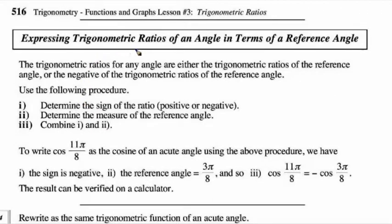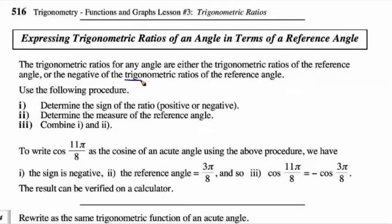Expressing trigonometric ratios of an angle in terms of a reference angle. The trig ratio for any angle is either the trig ratio of the reference angle or it's the negative of the trig ratio of the reference angle. So what's most important here is getting the trig ratio of the reference angle and then determining whether it's going to be positive or negative.